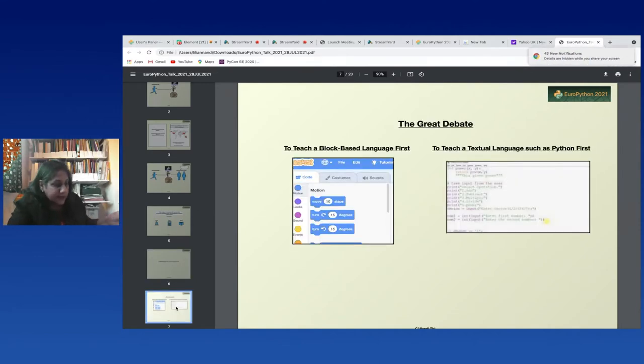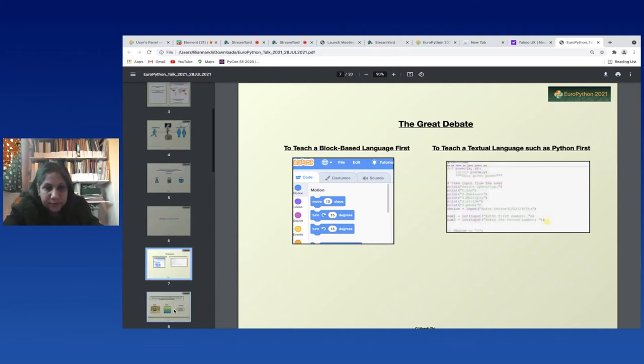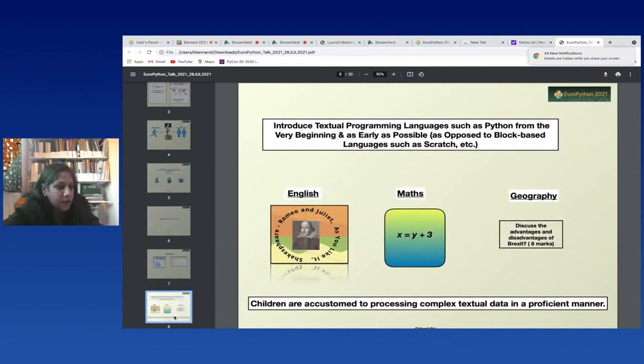Now there is this great debate about what language they should start with. Should they be introduced to a block-based language first at this stage, or a textual language such as Python? There is a school of thought that block-based language is more accessible at this stage, but I opted to introduce textual languages in the form of Python from the very beginning. The rationale for this is that if you look at what children do at the ages of 11, 12, and 13 in English literature, they study the works of William Shakespeare such as As You Like It, Romeo and Juliet.